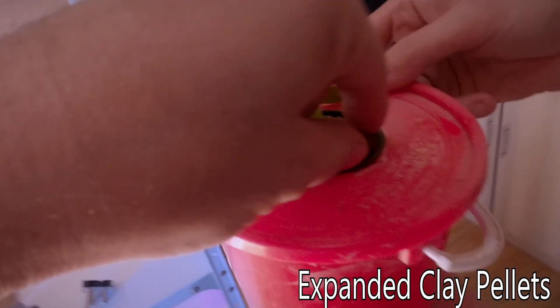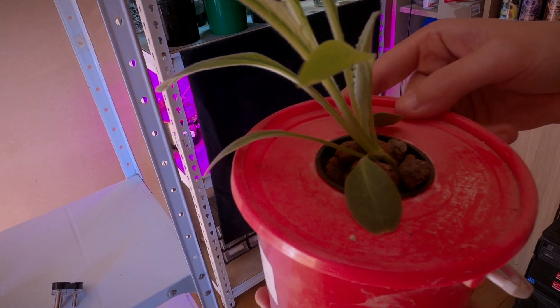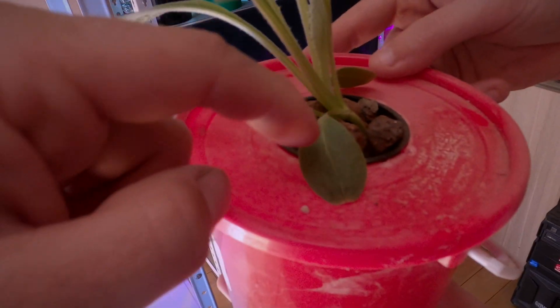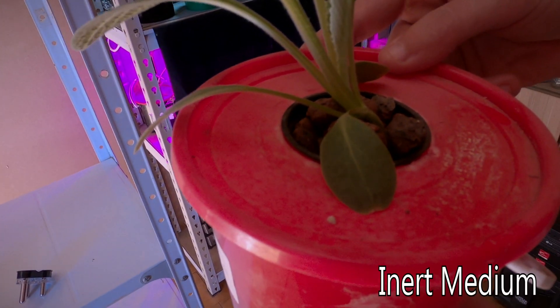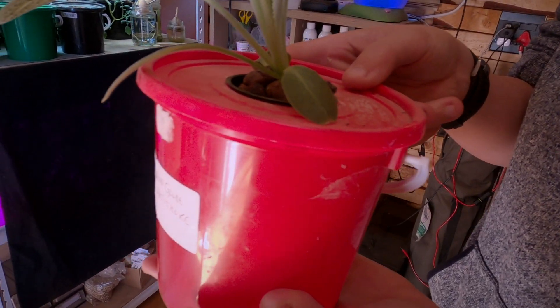These things are little clay pellets, but people use coco coir and many things, they even use gravel if you really want to. You can use gravel or anything, it just needs to stabilize the plant and not release organic matter, it must not decompose.